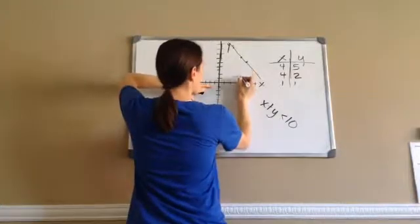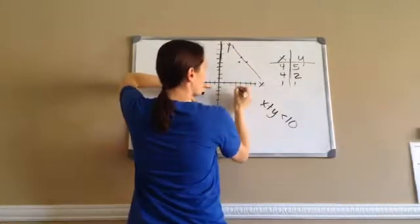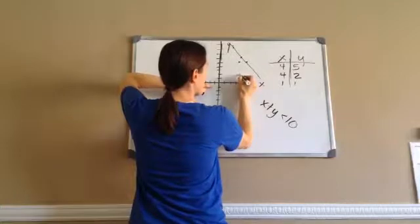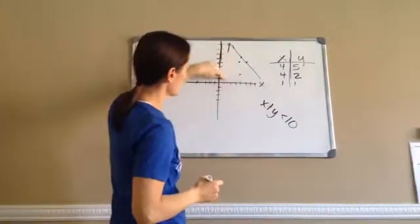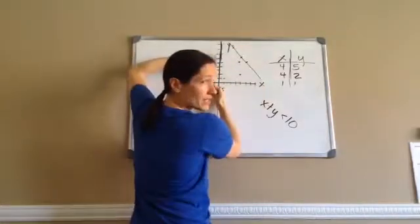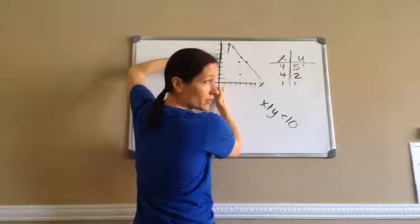1, 2, 3, 4, 5. 1, 2, 3, 4. 2. 1. What do you notice? They're all under this line.